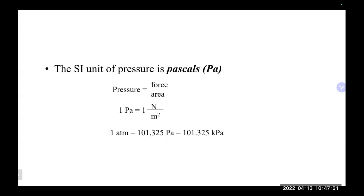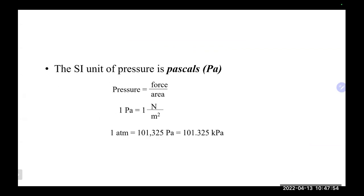The SI unit of pressure is a Pascal. One atmosphere equals 101,000 pascals or 101.3 kilopascals. We probably won't use pascals very much in this class.